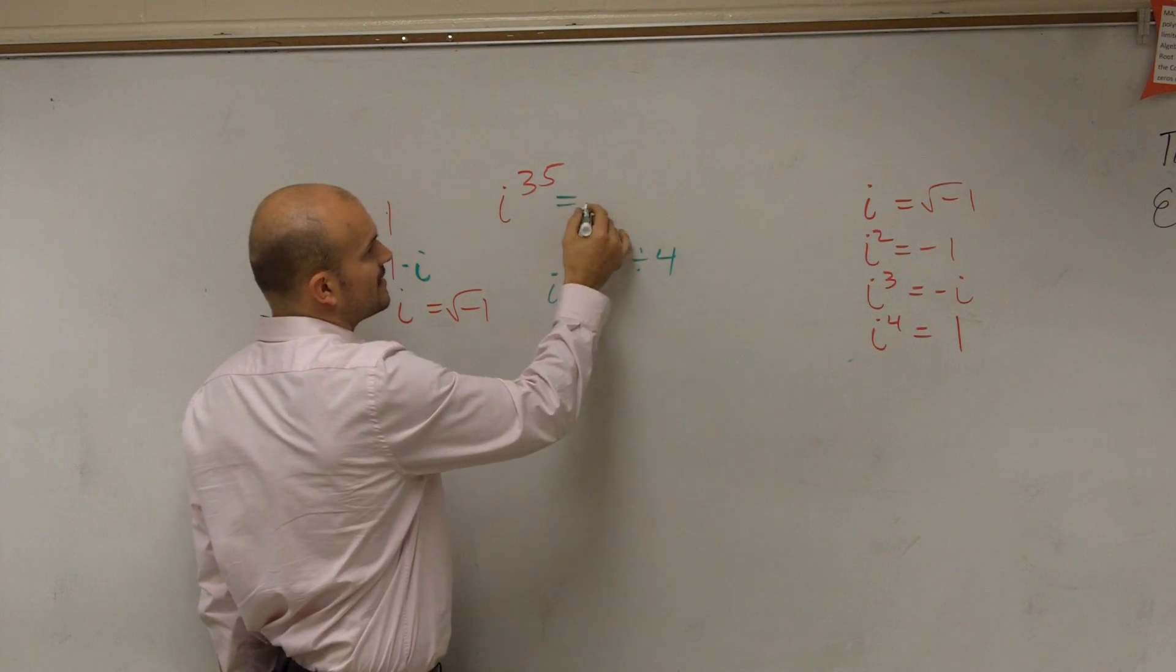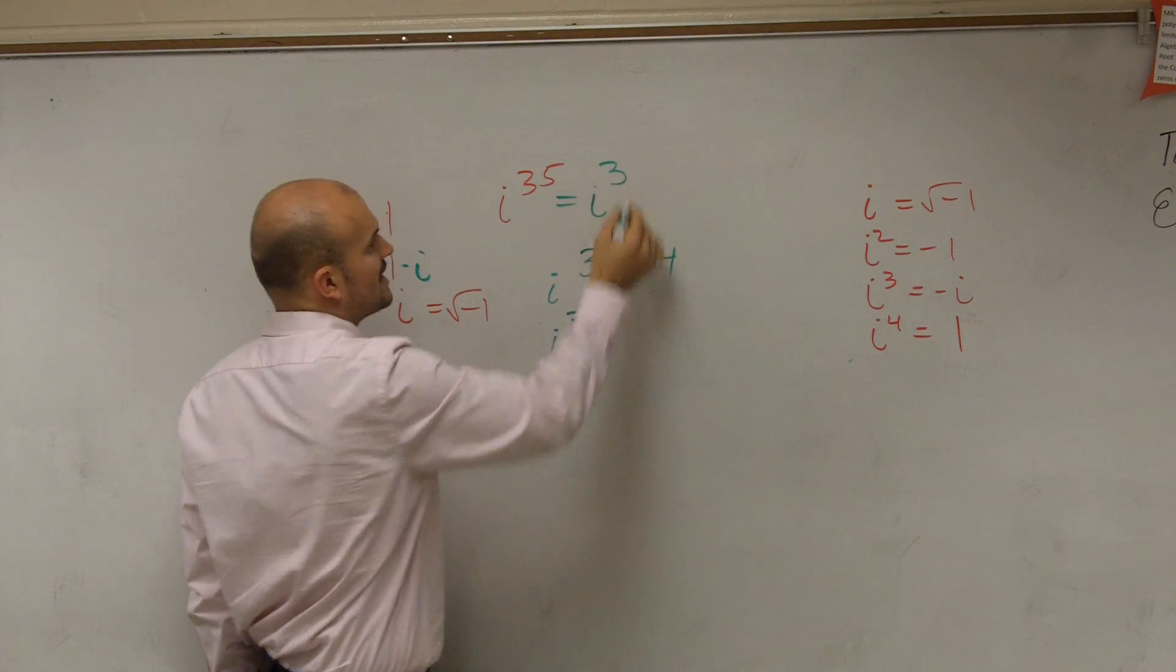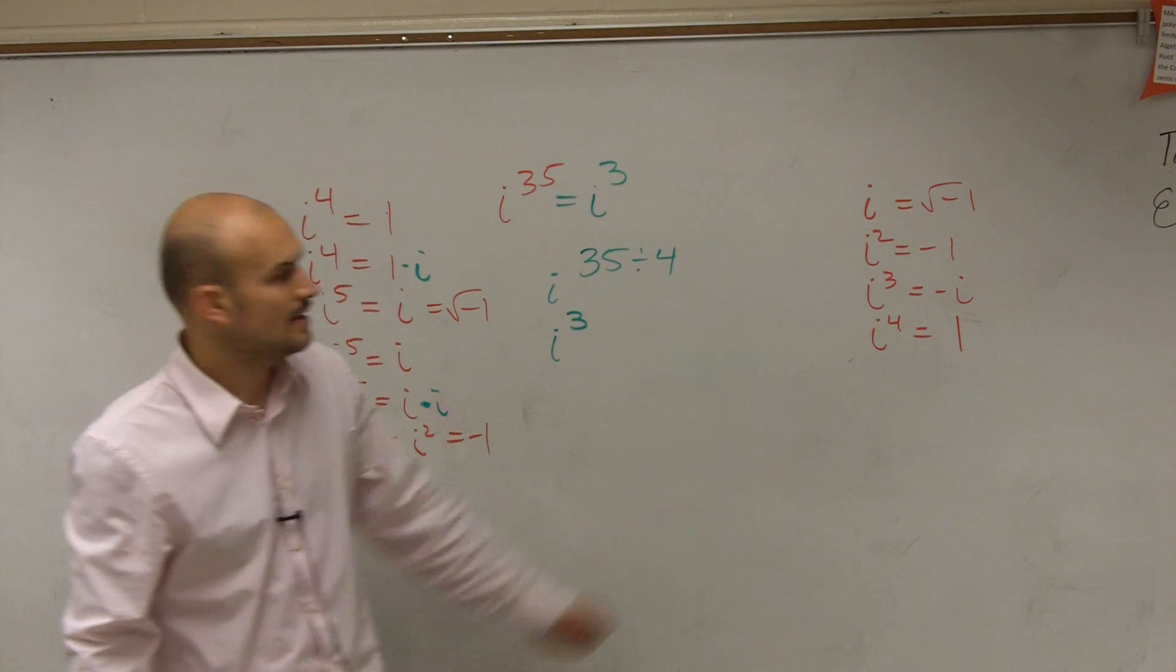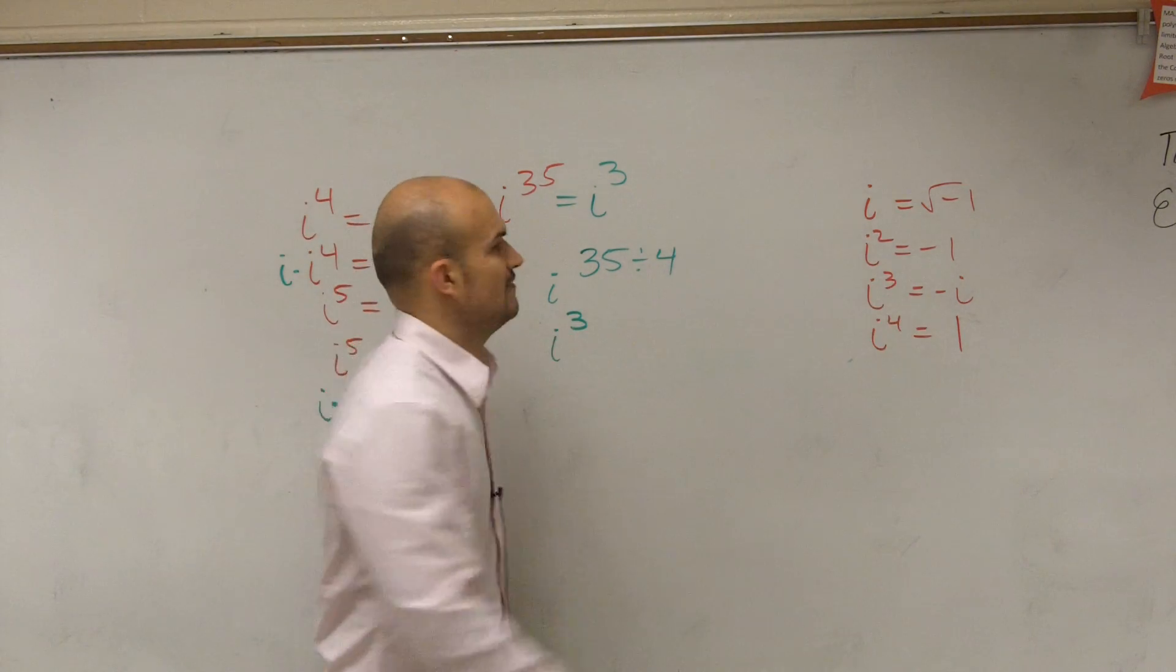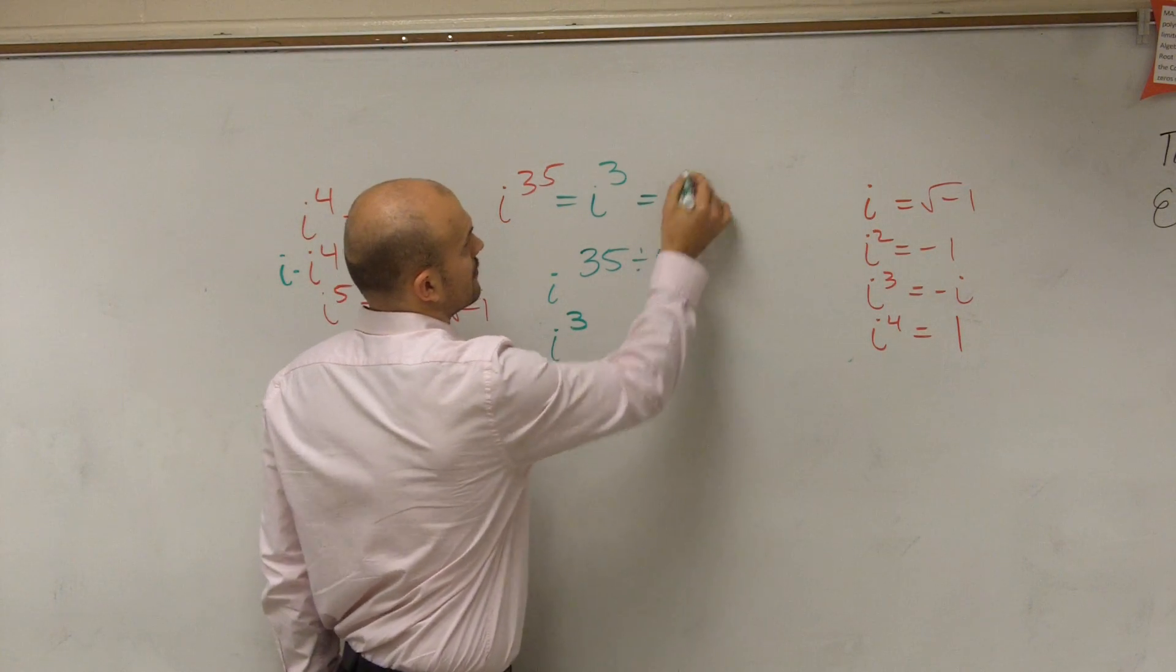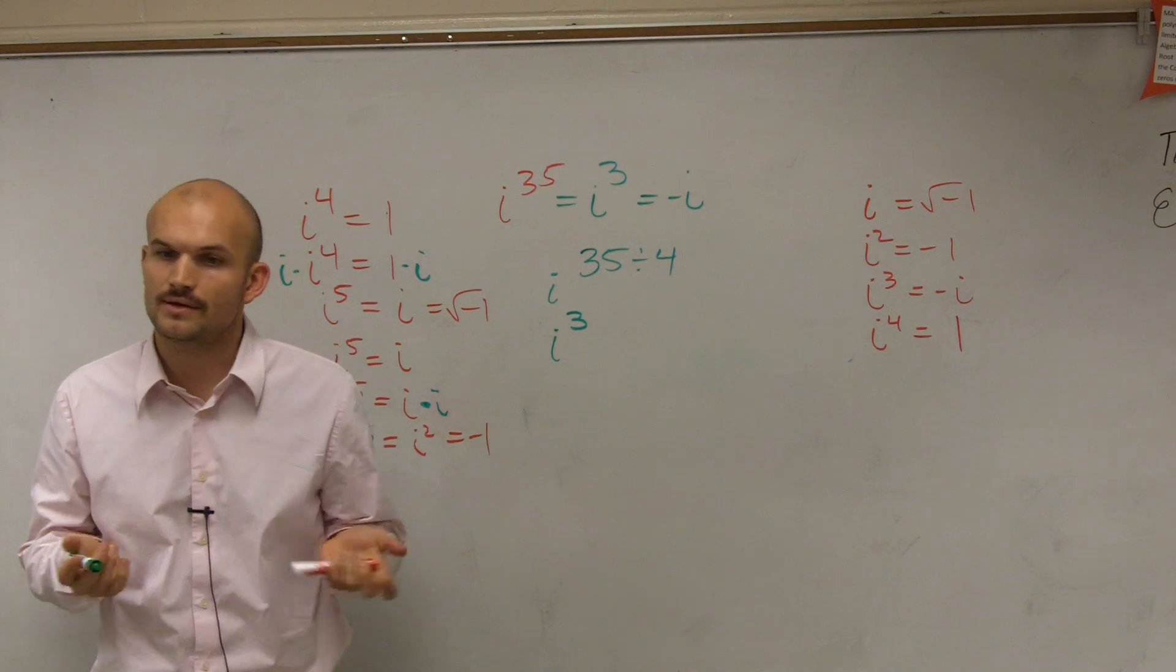So i to the 35th, when I take out those repetitions, is the same thing as i to the third. And what is i to the third equal to? Negative i. And there you go.